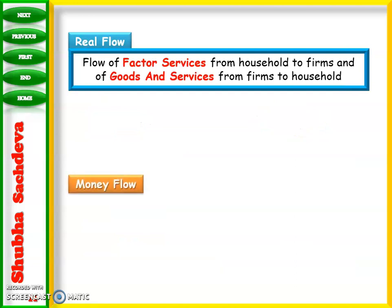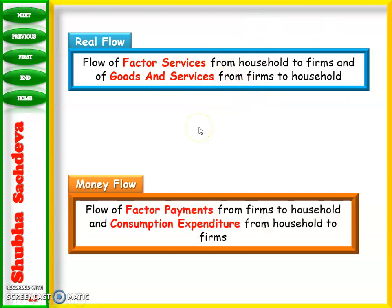Now, what is the real flow? The real flow is when, instead of money, we transfer goods or services. The flow of factor services goes from the household to the firms, and goods and services are sold from firms back to the households. Money flow, on the other hand, is the flow of factor payments from firms to household in exchange for factor services, and the flow of consumption expenditure from household to firm in exchange for goods and services.